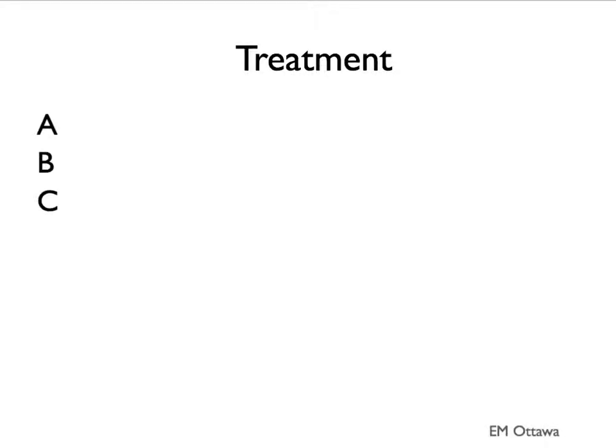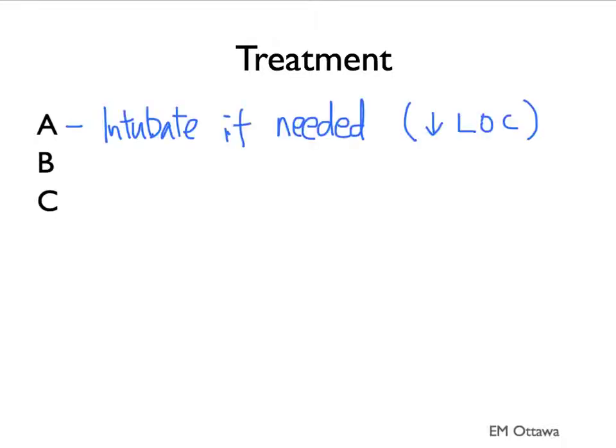In terms of treatment, the general treatment for any patient in the emergency department goes back to ABC. If the patient has a decreased level of consciousness, they need an airway — we might have to intubate the patient first. Oxygen should be given to the patient who is hypoxic. For circulation, IV fluids should be given. We will add vasopressors if the patient is persistently hypotensive.